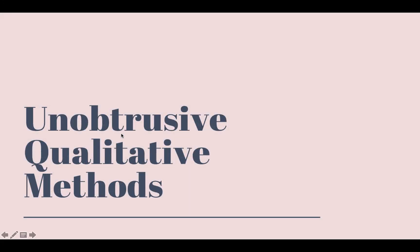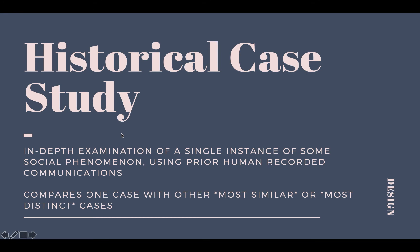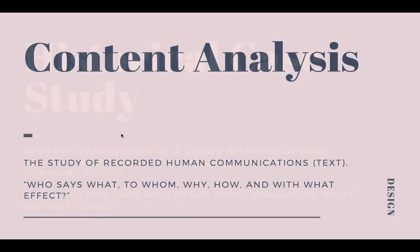Unobtrusive qualitative methods are not direct observations of social life but are based on data that already exist. A historical case study is an in-depth examination based on prior human-recorded communications — usually text or recordings — looking at ideographic explanations for what's going on in cases. Historical case studies look back because we can't interview or talk to those people. Content analysis is the study of human communications, usually text; if recordings like videos or speeches are used, they're translated into text. We're trying to figure out who says what, to whom, why, how, and with what effect.